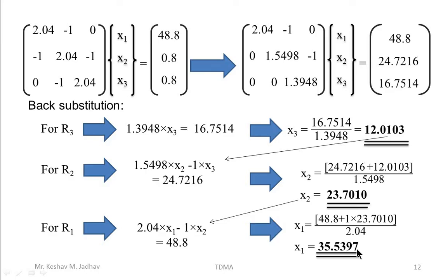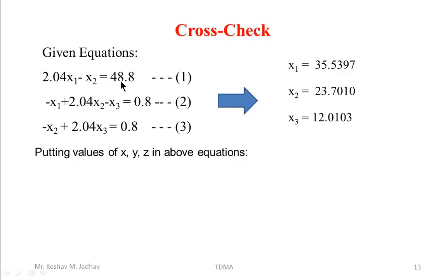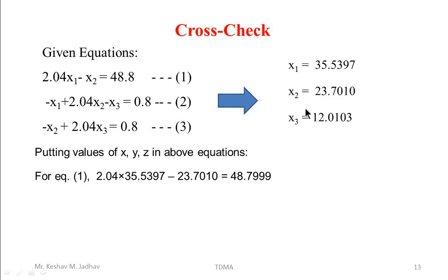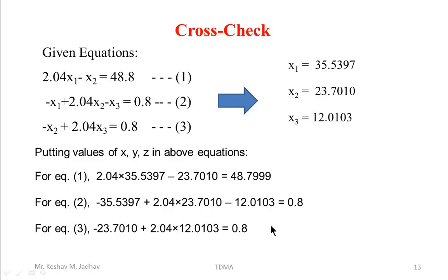This is the solution of the given set of linear equations using the tridiagonal matrix algorithm. We can cross-check by substituting back into the original equations. For the first equation: 2.04 × 35.5397 − 23.7010 ≈ 48.7999, which is approximately equal to 48.8. Similarly, the second and third equations are also satisfied, confirming our answer is correct.